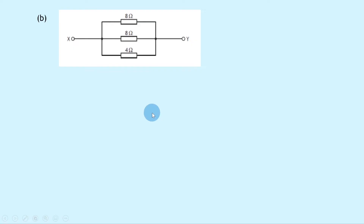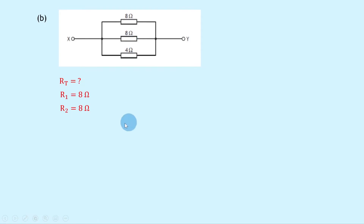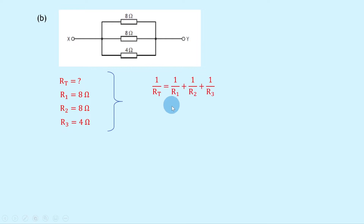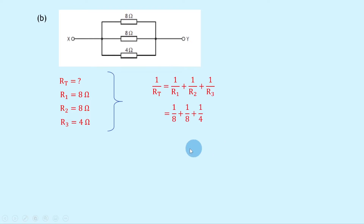Writing down what we know: we're trying to find the total resistance. R1 is 8 ohms, R2 is 8 ohms, and R3 is 4 ohms. Writing down our relationship for resistors in parallel: 1 over RT equals 1 over R1 plus 1 over R2 plus 1 over R3. Substituting in the numbers gives us 1 over 8 plus 1 over 8 plus 1 over 4.